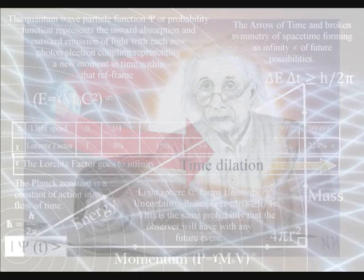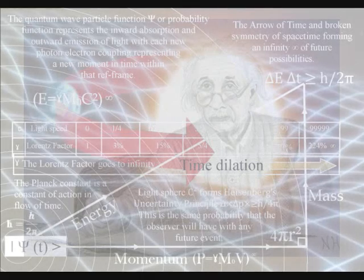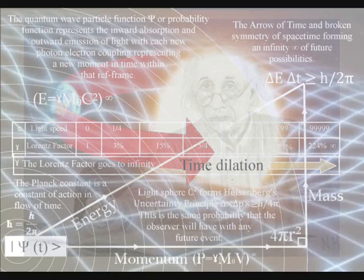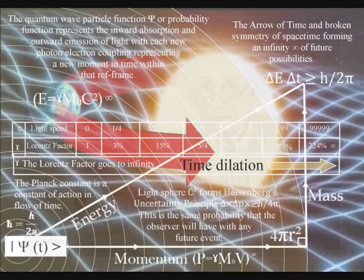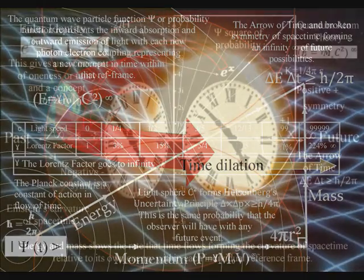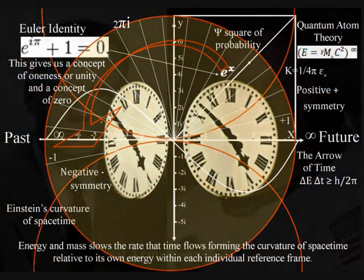In general relativity, clocks run faster higher in a gravitational field. Therefore, we can see that the greater the energy of an individual reference frame, the slower time runs within that reference frame. This is called time dilation, and it is a totally natural process within our universe.